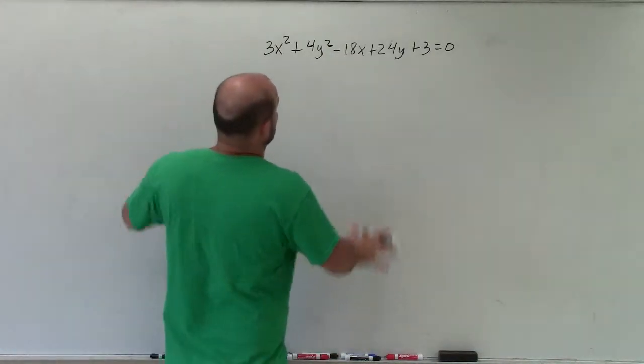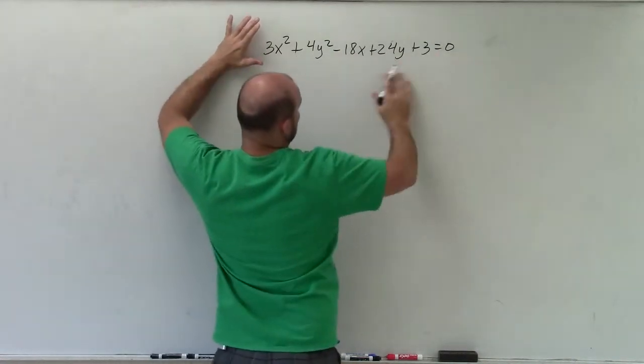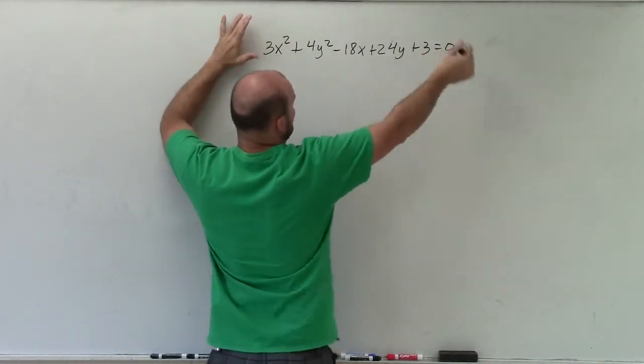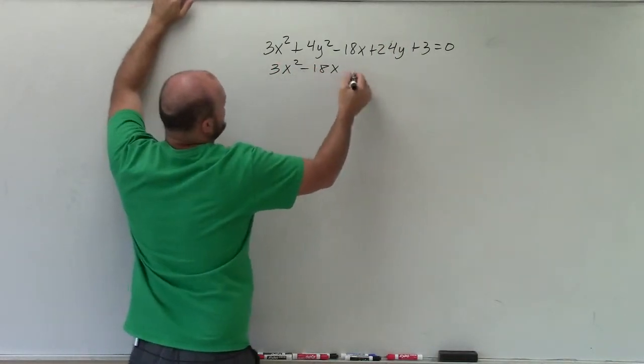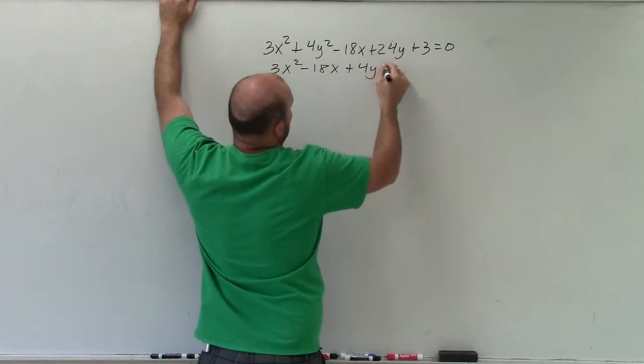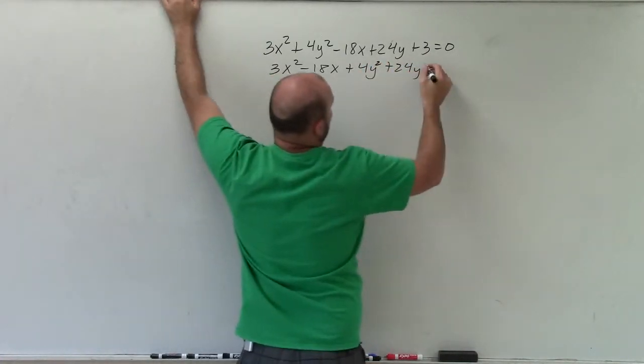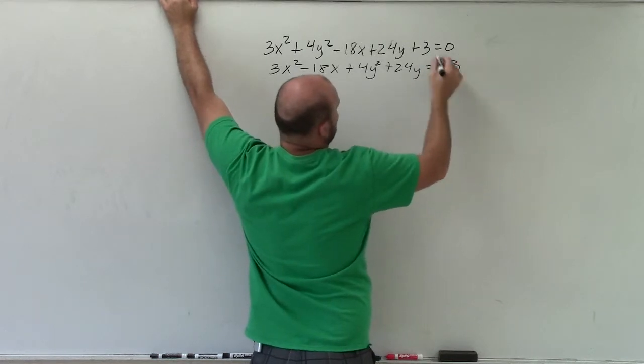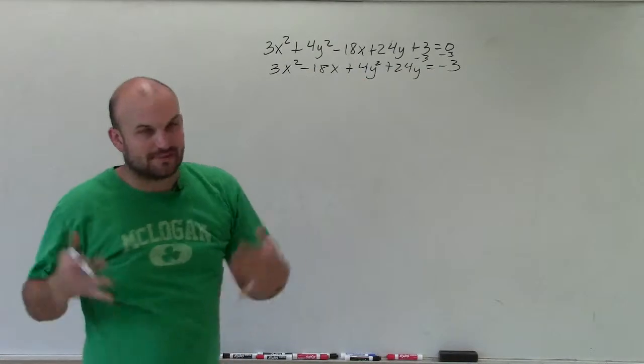So to do that, the first thing I'm going to do is I'm going to group the x's and the y's together. And remember, we want it to set equal to 1 at the end. So we'll get the constant over to the right side. So I have 3x squared minus 18x plus 4y squared plus 24y equals negative 3. So I subtracted 3 on both sides. And then I just regrouped them together.